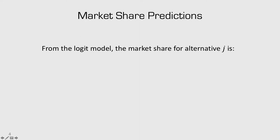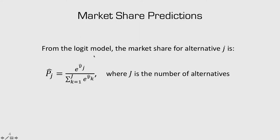Another thing we can do once we've estimated a model is use those coefficients to make predictions about other markets. In a logit model, the probability of any alternative being chosen is a fraction where v sub j is the observed utility — just the sum product. If we already have our estimated coefficients, we can plug those in and compute the observed utility for a different market, then put them into this formula and compute market shares.